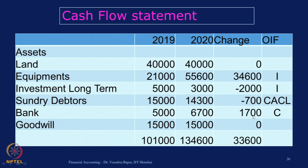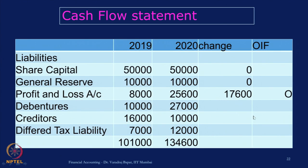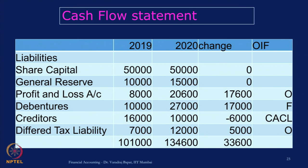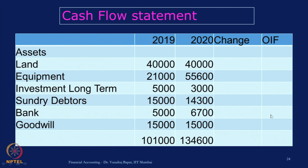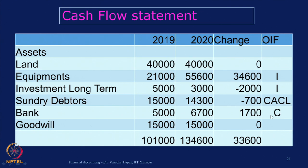Normally on the liability side there are F-type or O-type items, and on the assets side there will be I-type items like fixed assets or investments, and O-type or CACL-type items.